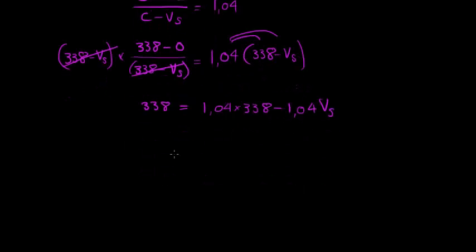And if we solve it, in other words, add 1.04 vS on this side. And on that side, 1.04 vS on this side. Then on this side, we have it gone. On that side, we have it there and positive. And also subtract the 338 on this side. And on this side, negative 338. What do we get?